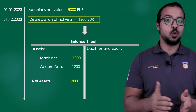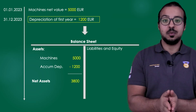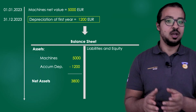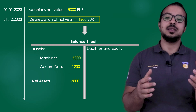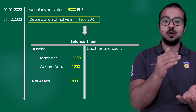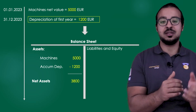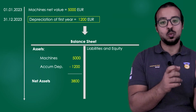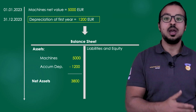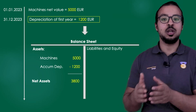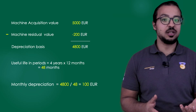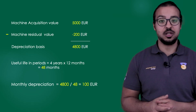After one year, we will have accumulated depreciation of 1,200 euros — 100 euros multiplied by 12 months. The acquisition cost of the machine is still 5,000, so the net value on the balance sheet is 5,000 minus 1,200, giving us 3,800. We continue this depreciation through the useful life of the asset. So now we understand the meaning of depreciation expense and accumulated depreciation.